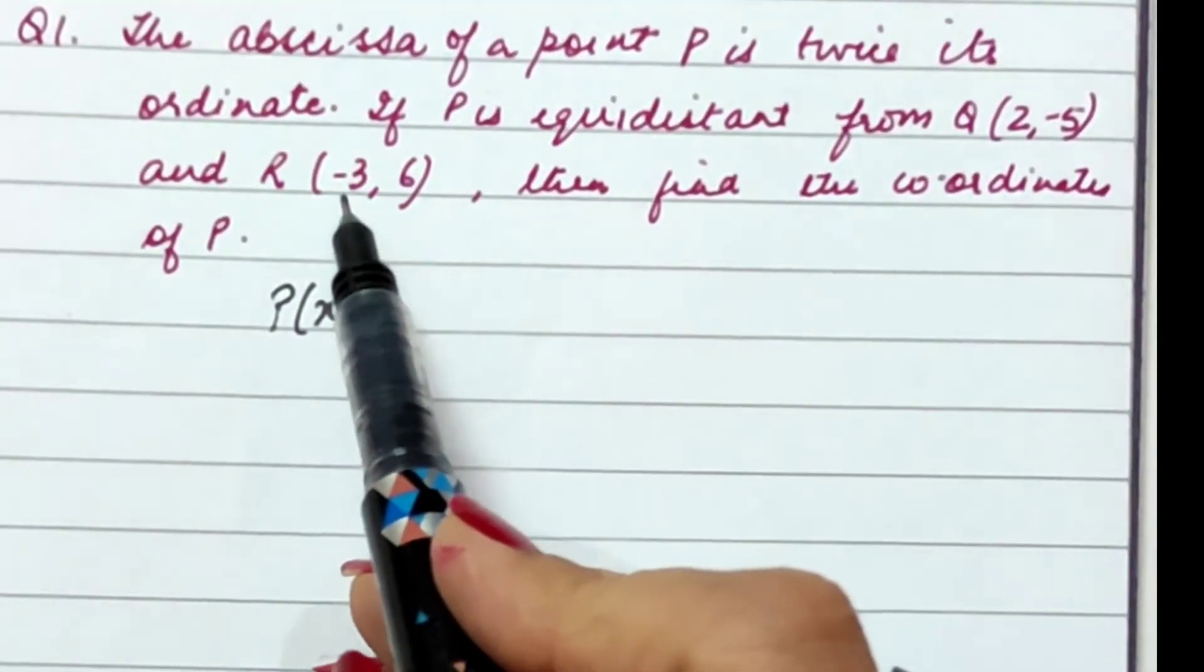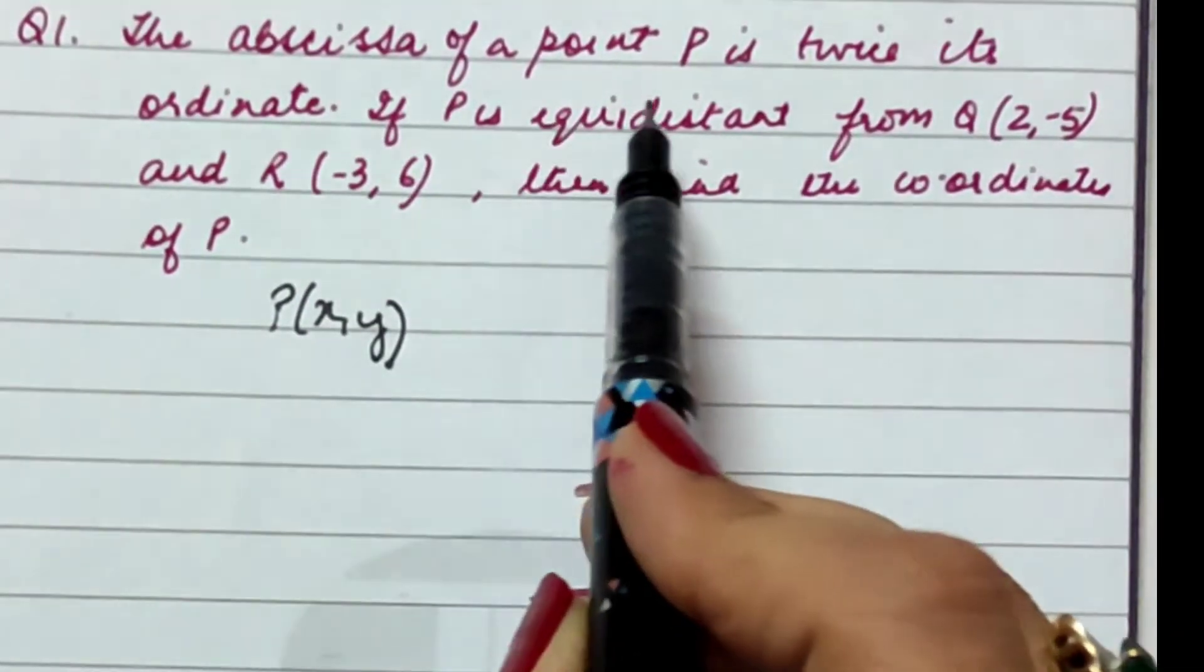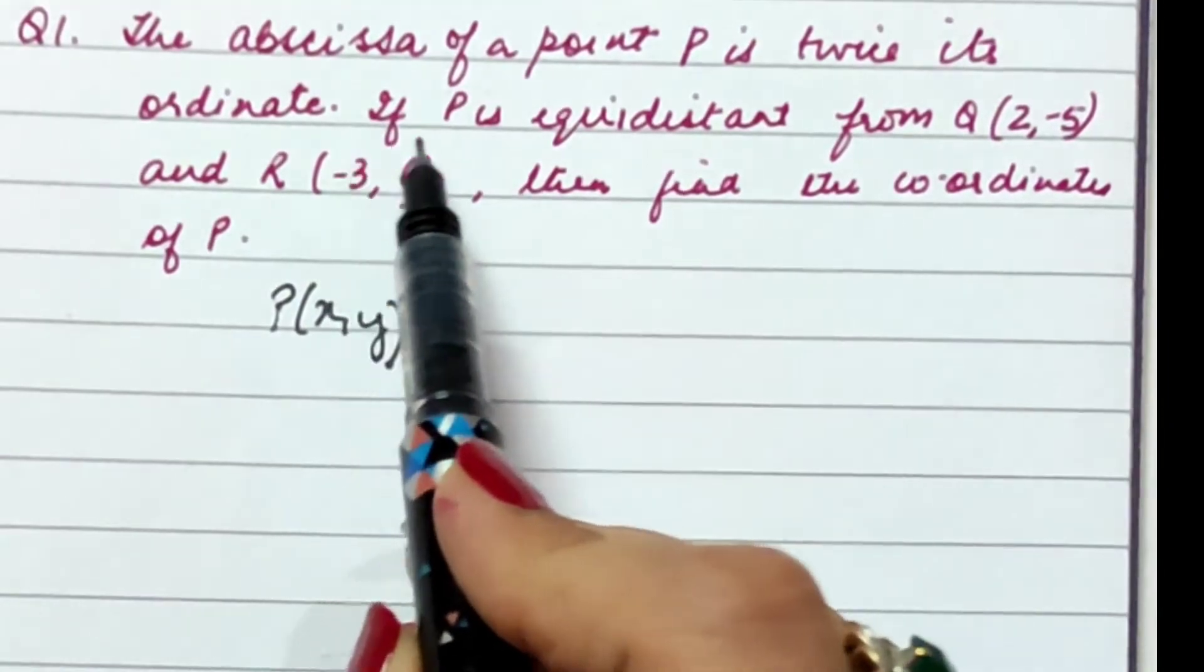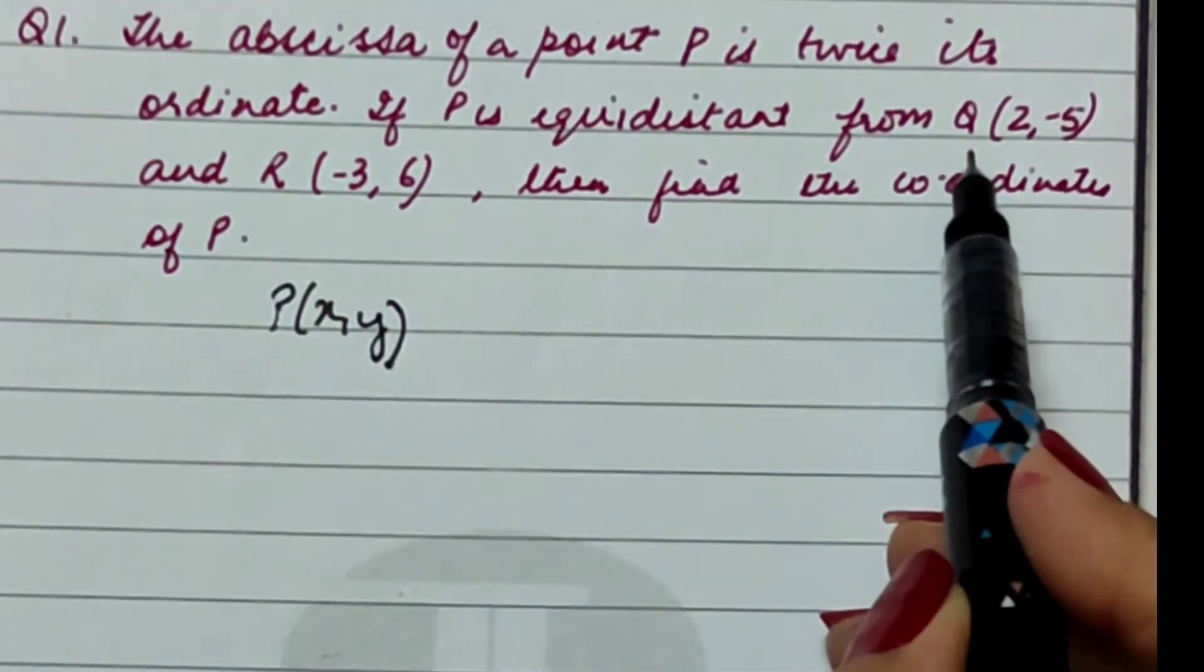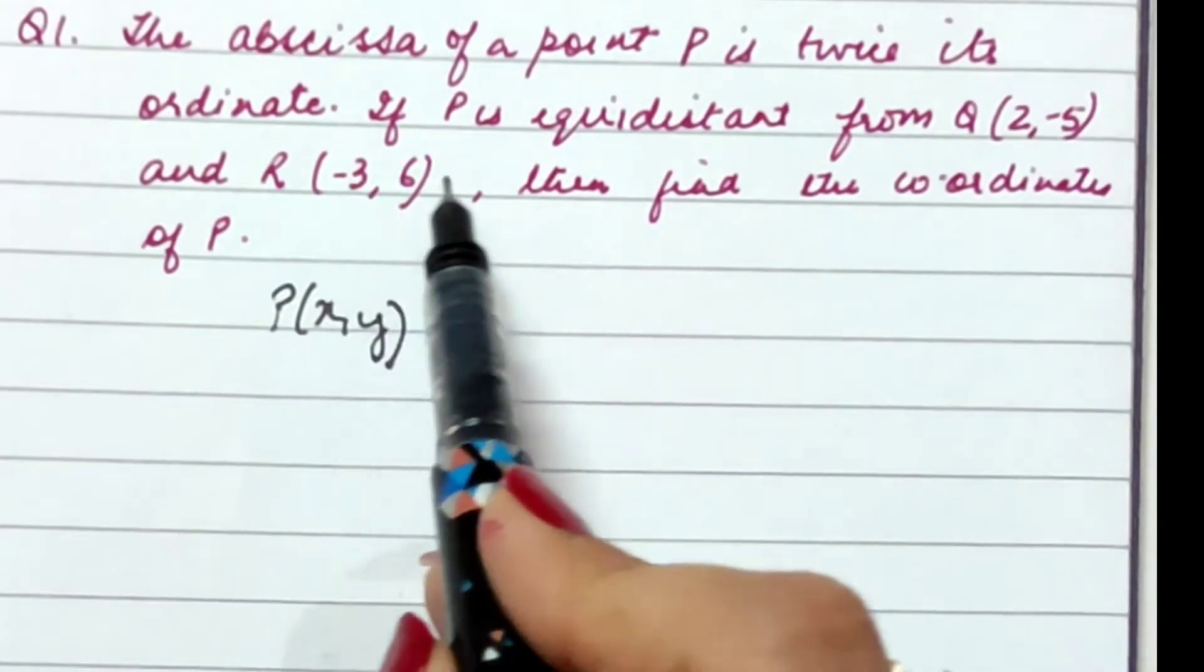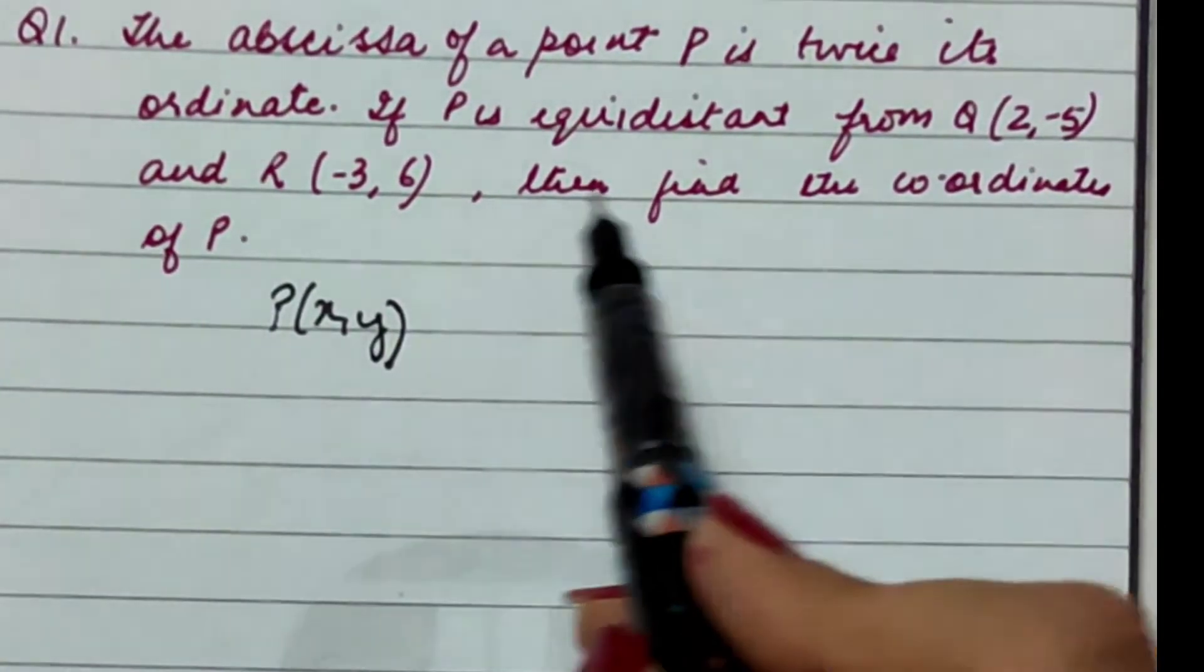Let us take up this question from coordinate geometry. The abscissa of a point P is twice its ordinate. If P is equidistant from Q(2,-5) and R(-3,6), then find the coordinates of P.